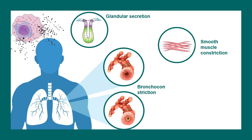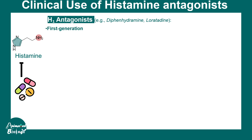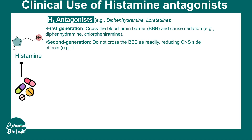Histamine has additional adverse effects including bronchoconstriction, glandular secretion, smooth muscle constriction, and vasodilation. Since these responses are mediated by histamine, histamine antagonists can treat allergic reactions. H1 antagonists are the primary allergy medications. First-generation H1 antagonists cross the blood-brain barrier and cause sedation and drowsiness, while second-generation H1 antagonists do not cross the blood-brain barrier and lack these sedating side effects.